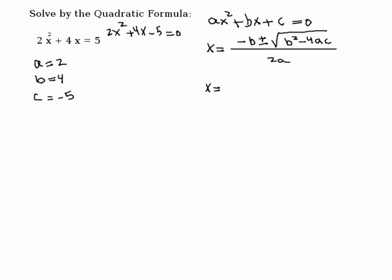So let's substitute the numbers in the formula. So we have minus 4 plus and minus square root of 16, minus 4 times a is 2, and c is minus 5. Okay, so those of you who are following this, I want you to see if you can reduce this.